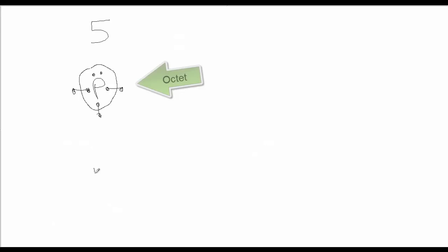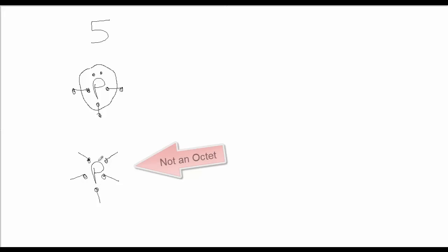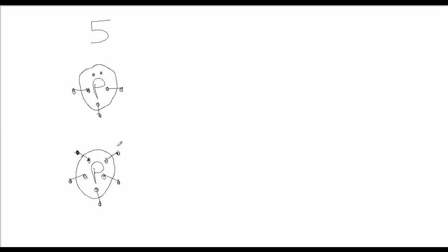Phosphorus, on the other hand, has the possibility of disobeying the octet rule. It could form five single bonds while still retaining its five valence electrons. Phosphorus has its five electrons in its valence but has no lone pairs — all five electrons are occupied in five single covalent bonds. It picks up five more electrons from other atoms, giving it ten electrons total.